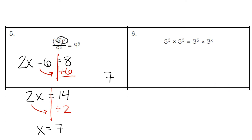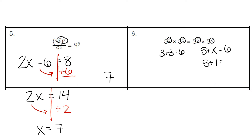For number 6, the base numbers are 3, and we have exponents being multiplied, so we would add the exponent pieces: 3 plus 3 to get an answer of 6. We need the other side to also equal 6, so we add our exponents — 5 plus what equals 6. We know that 5 plus 1 is equal to 6, so that missing exponent is going to be a 1.